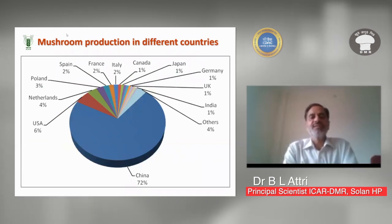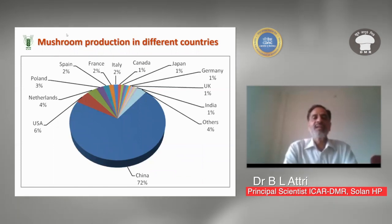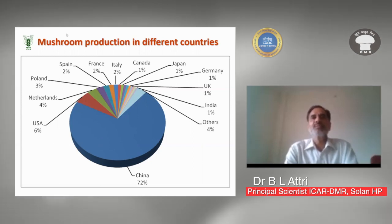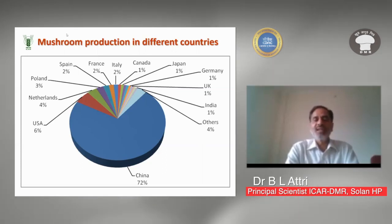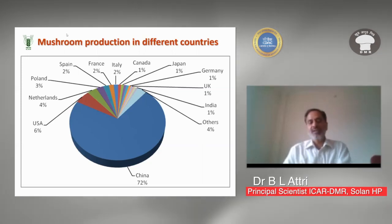Looking at production across different countries, China is the leader, producing around 72% of global output — and according to the latest data, this figure is now more than 80%. India's total production is less than 1%, while other countries like the USA, Netherlands, Poland, Spain, France, Italy, and Canada all contribute to total world production.